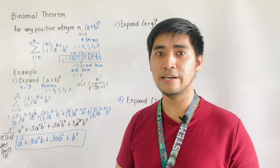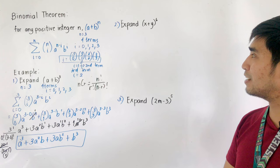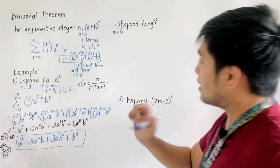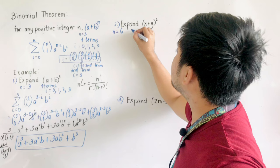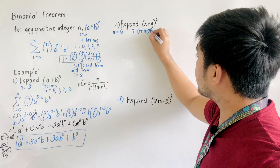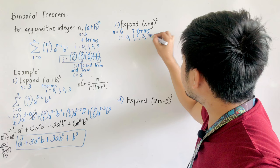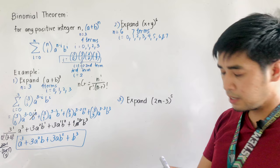Let's have another example: expand (x + y) raised to 6. This is longer than the first example. We can say n is equal to 6, so we have seven terms. The values of i are zero, one, two, three, four, five, and six. Let us now write the formula for the binomial expansion.